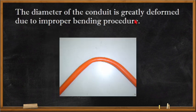Next, we have the diameter of the conduit being greatly deformed due to improper bending. In this type of bending, there is no kink, but the conduit has been deformed.